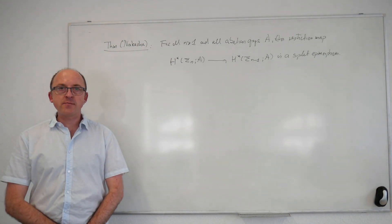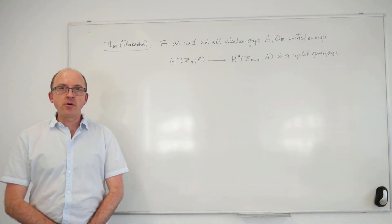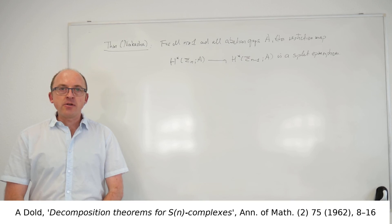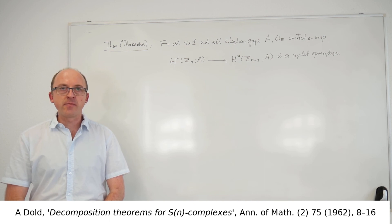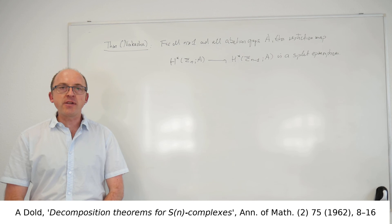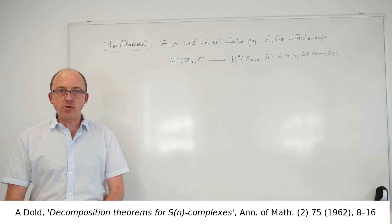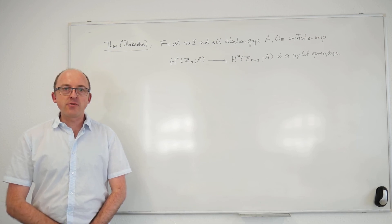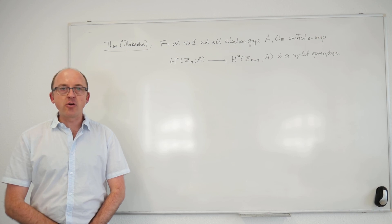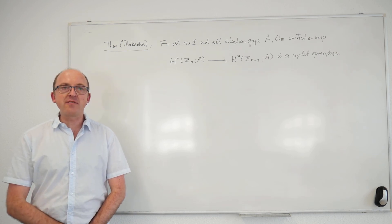Two years after Nakaoka's paper appeared, Dold published a different argument, also in the Annals. Dold's proof is extremely elegant and makes it crystal clear what exactly is the structure necessary to make this work. Dold's result actually works not just for group cohomology but very much more generally — namely, it works for fin global functors. This is the version of global functors where the indexing category is not all compact Lie groups but only finite groups.